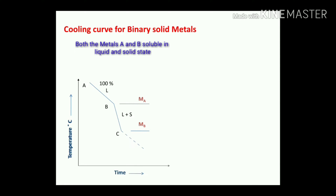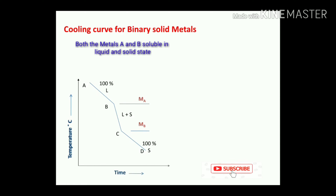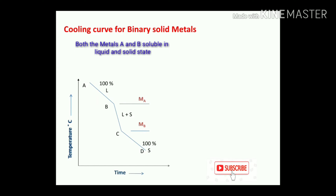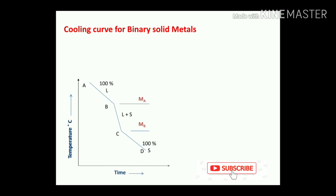Once the temperature drops further with respect to time, we reach the C to D region, which represents 100% solid. To summarize: region A to B is above the melting points of both metals and is 100% liquid; between B and C (between the two melting points) it is liquid plus solid; and after point C (below the melting point of metal B), it becomes 100% solid. This is also proven by the Gibbs phase rule.